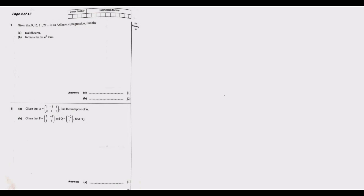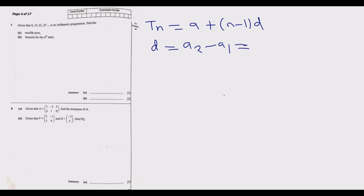Question 7 reads: given that 9, 15, 21, 27 is an arithmetic progression, find the 12th term. The nth term of an arithmetic progression is given by the first term plus n minus 1 times the common difference. The common difference D is the second term minus the first term: 15 minus 9 equals 6. Confirmed: 21 minus 15 equals 6, and 27 minus 21 equals 6. So D equals 6.